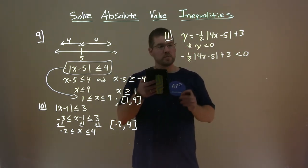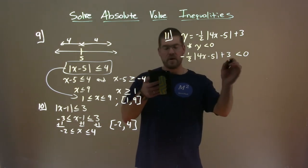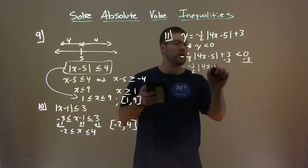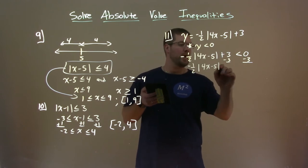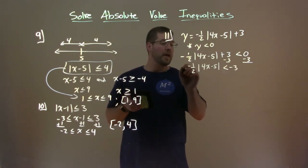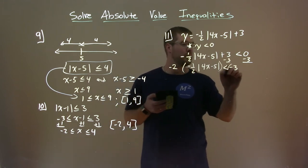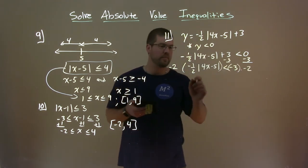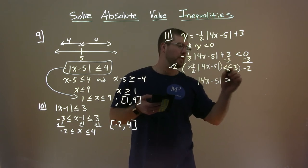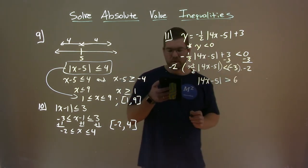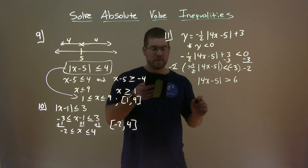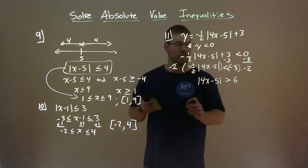What we're going to do is get the absolute value by itself. Subtract 3 from both sides: negative one-half absolute value of 4x minus 5 is less than negative 3. Then multiply both sides by negative 2 — and remember, we flip the inequality sign. So we have absolute value of 4x minus 5 is greater than 6.